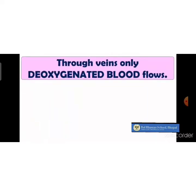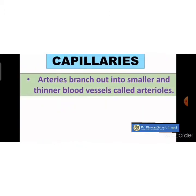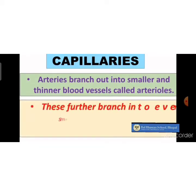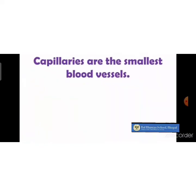Through veins, de-oxygenated blood flows — the blood not having oxygen, or in other words the impure blood. Veins are blue in color. The third type of blood vessels are capillaries. Arteries branch out into smaller vessels called arterioles, which further branch into even smaller blood vessels called capillaries. Capillaries are the smallest blood vessels.